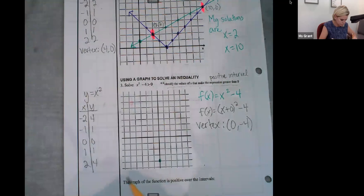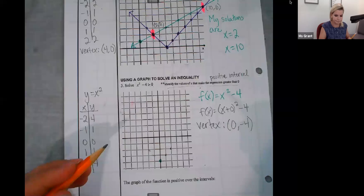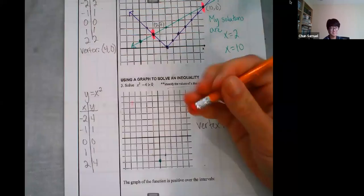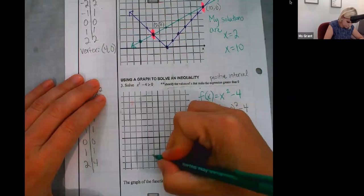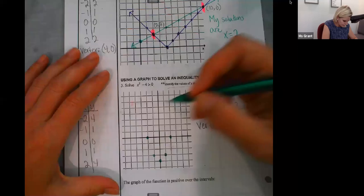Graph it. My vertex is at zero, negative four. Over one, up one. Over two, up two. Get it? It's up four. Oh jeez, over two, up four. I was thinking about the last one. Over two, up four.